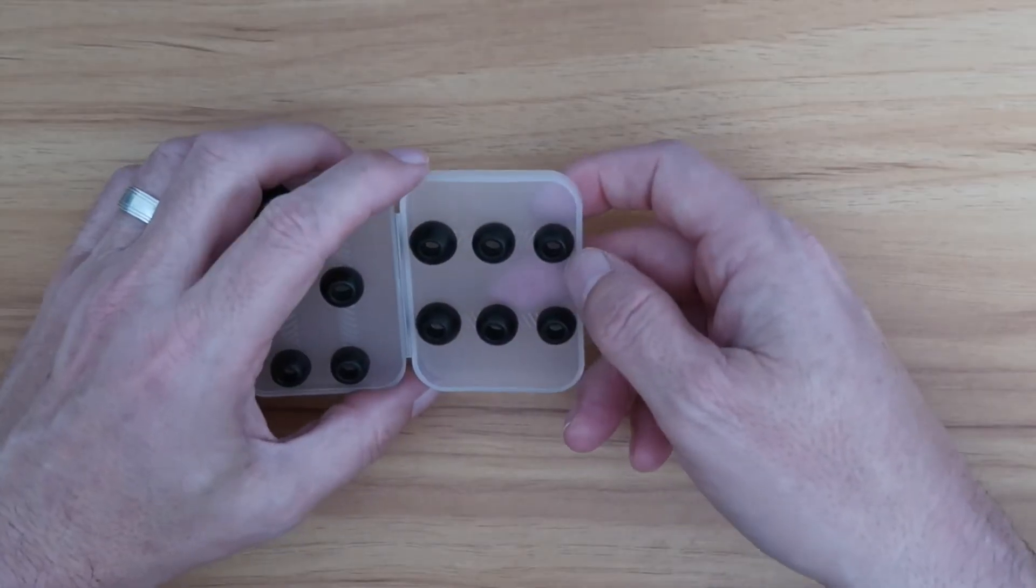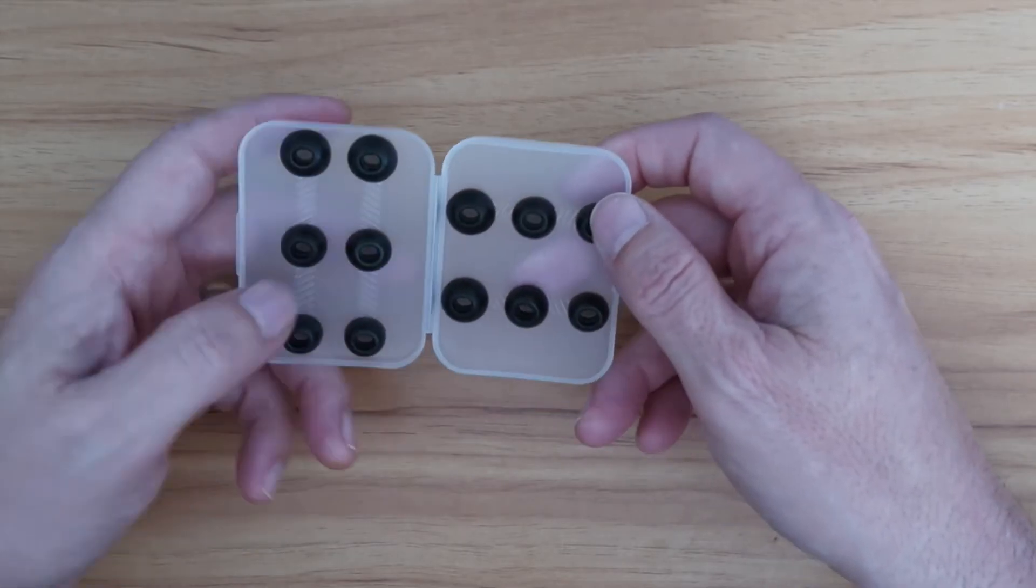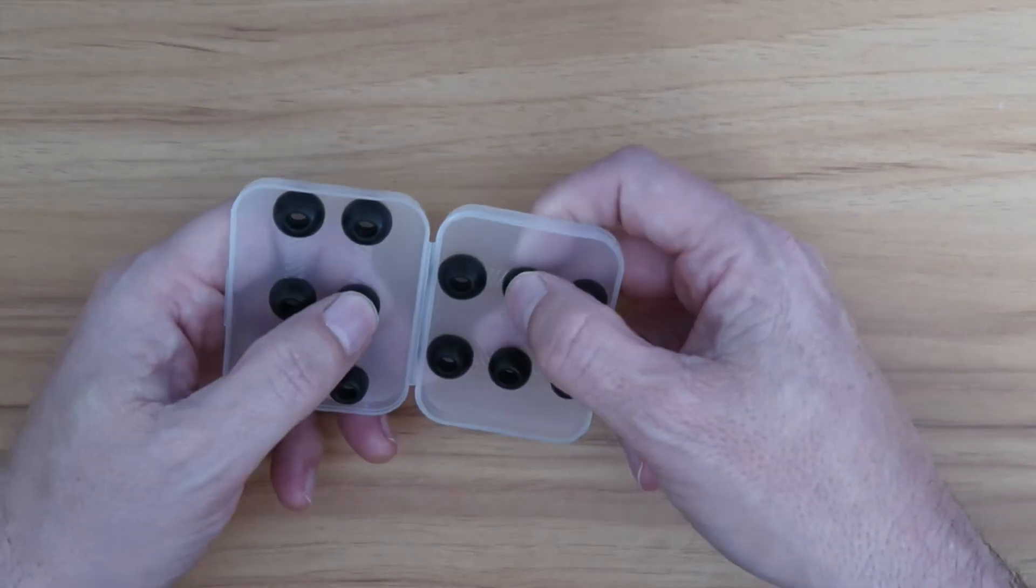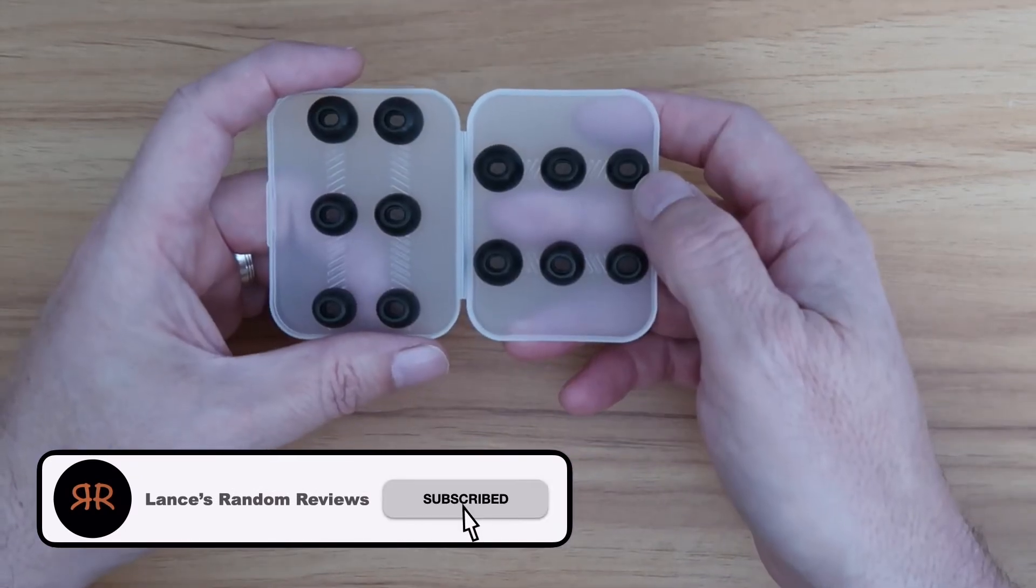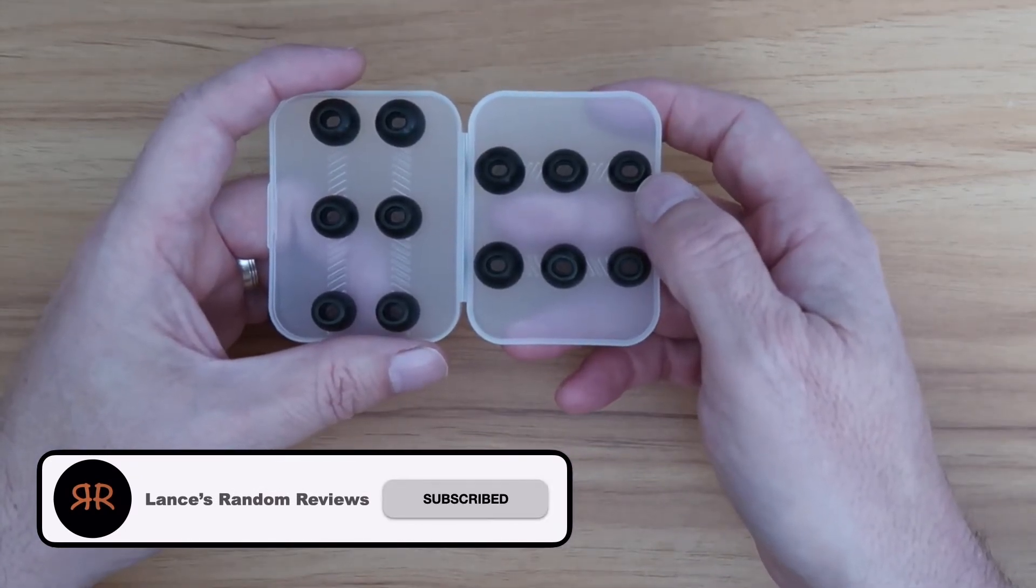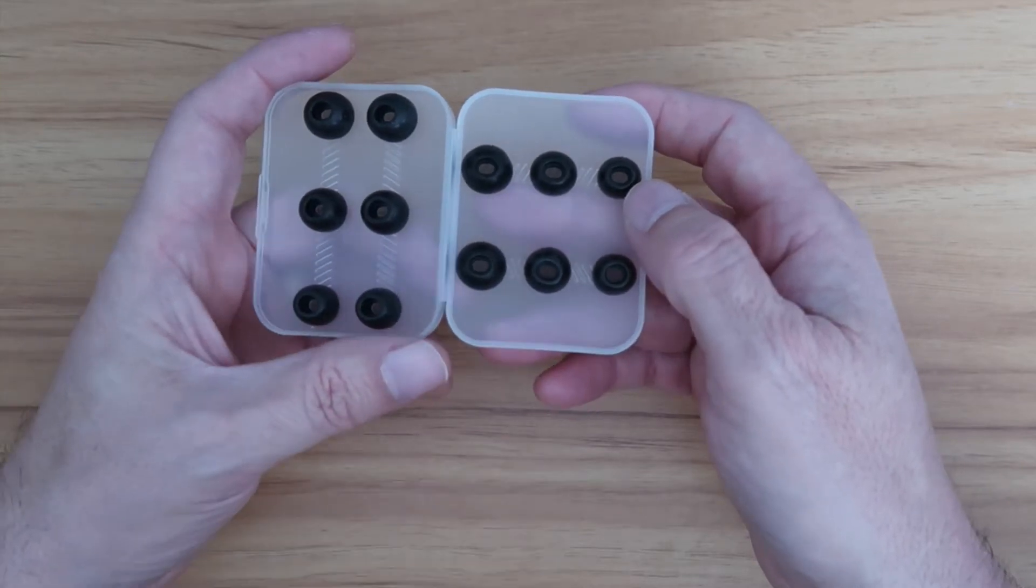You get two sets of each: two sets of small, two sets of medium, and two sets of large. They're made from a soft and comfortable memory foam material that will not bring pressure to your ear canals.